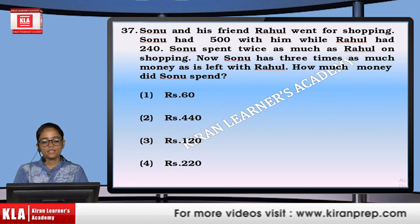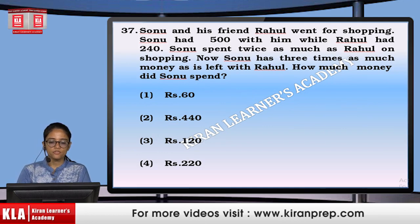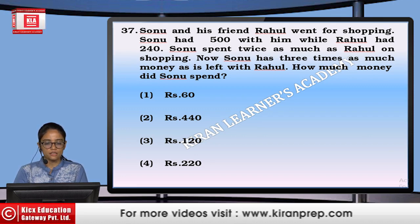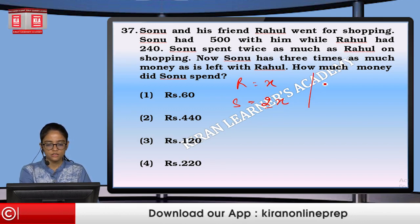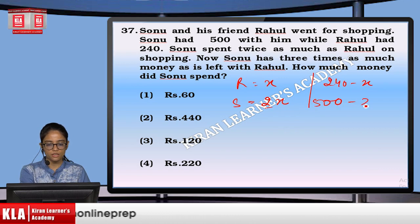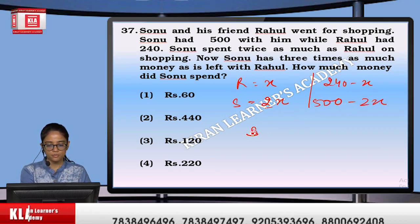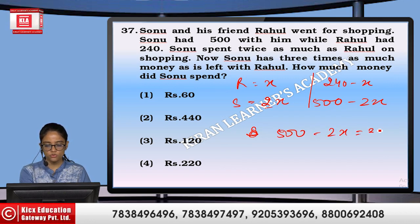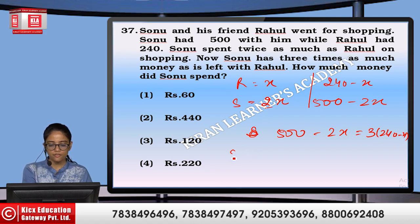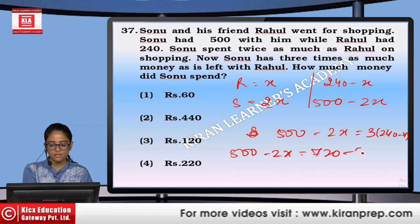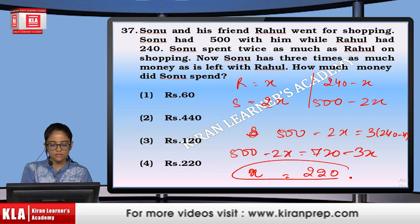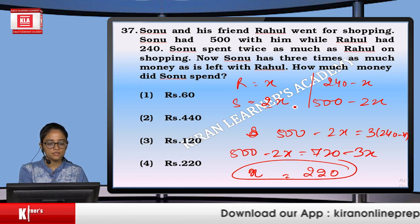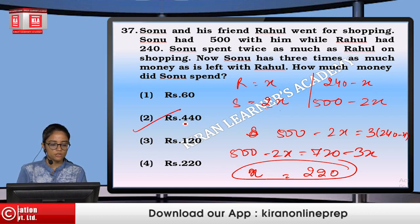Sonu had ₹500 and Rahul had ₹240. If Rahul spent X, Sonu spent 2X. After spending, Sonu has 3 times Rahul's remaining amount: 500 minus 2X = 3(240 minus X). So 500 minus 2X = 720 minus 3X, giving X = 220. Rahul spent ₹220, Sonu spent ₹440. Option number 4.